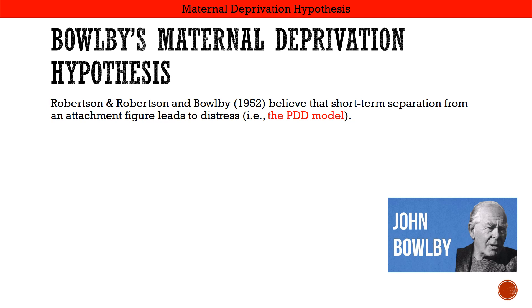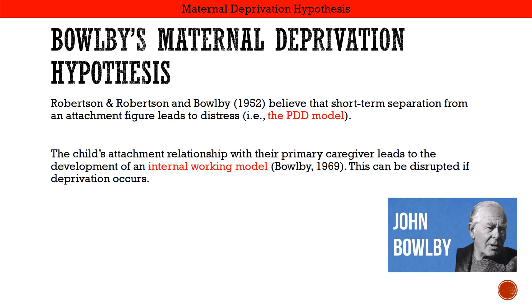In the protest stage there will be lots of crying, looking for the parent, possibly moving towards the door where the parents exited the room. Despair is when the child moves their feelings and anger inward — they would suck their thumb and use teddies and blankets for comfort. In the final detachment stage, if the caregiver returned, there would be anger and pushing away — the child has detached from them. The child's attachment relationship with their primary caregiver leads to the development of the internal working model, which can be disrupted if deprivation occurs.